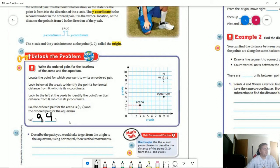Describe the path that you would take to get from the origin to the aquarium. Using horizontal and then vertical, we would start here. So where I'm putting this little bit of a dot, here's our origin. We are going to head to the right to get here. And then we are going to head up.